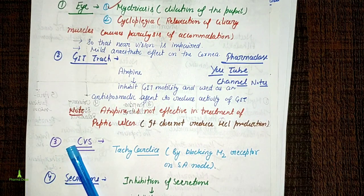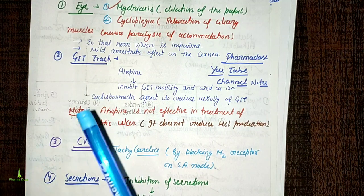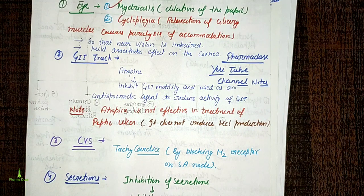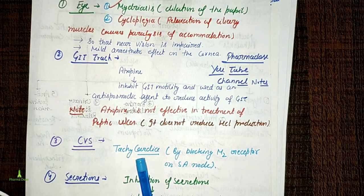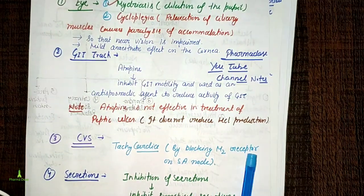Atropine is not effective in the treatment of peptic ulcer disease. Regarding cardiovascular effects: cholinergic agonists had negative inotropic, chronotropic, and dromotropic effects — reducing heart rate and causing bradycardia and hypotension. Atropine will produce tachycardia — increasing heart rate by blocking M2 receptors on the SA node.